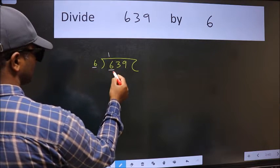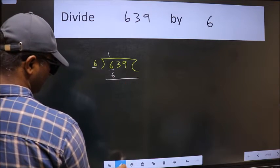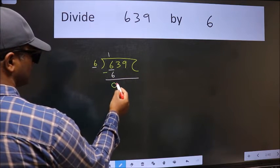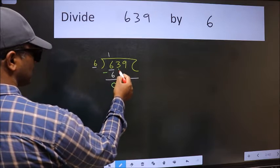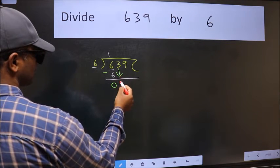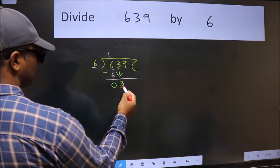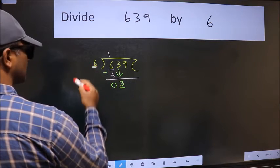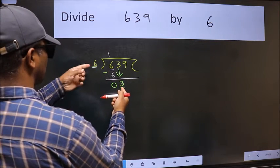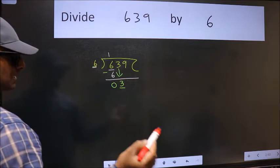Six ones is six. Now we should subtract. We get zero. After this, bring down the next number, so three down. Now here we have three and six here. Three is smaller than six, so we should bring down the second number.